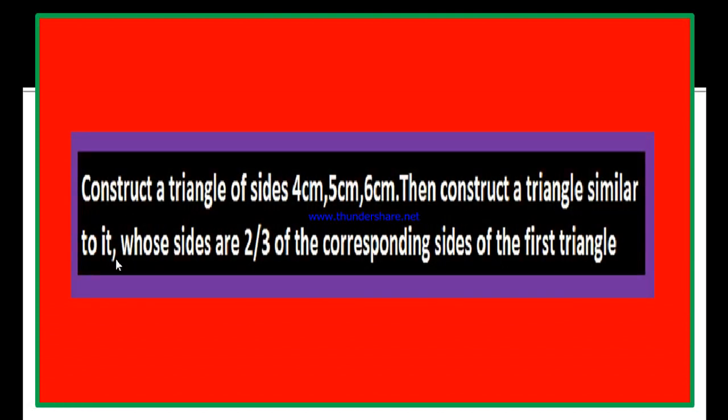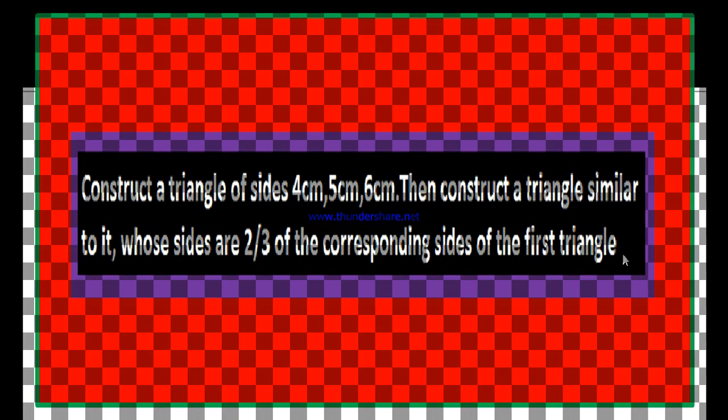This video's question is: construct a triangle of sides 4 cm, 5 cm and 6 cm. Then construct a triangle similar to it, whose sides are 2/3 of the corresponding sides of the first triangle. I shall repeat the question: Construct a triangle of sides 4 cm, 5 cm and 6 cm. Then construct a triangle similar to it, whose sides are 2/3 of the corresponding sides of the first triangle.